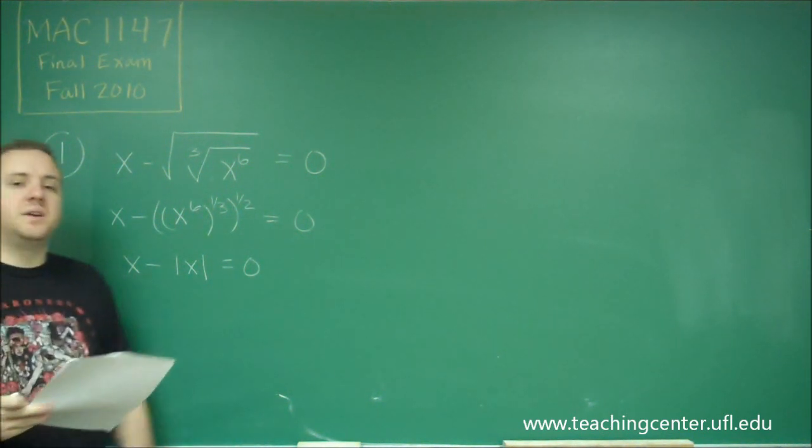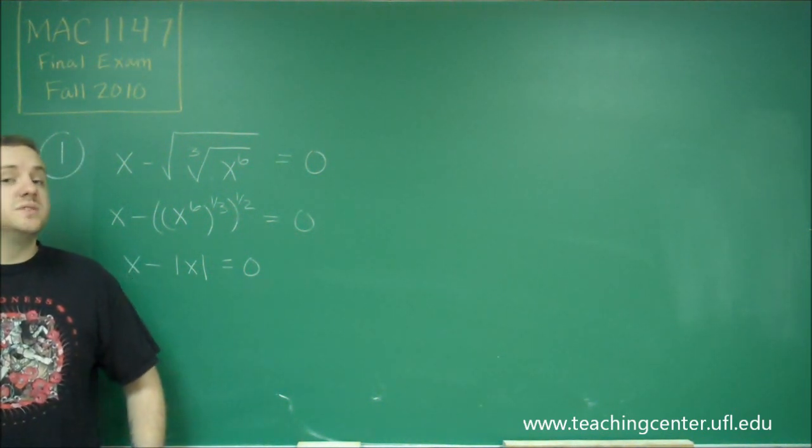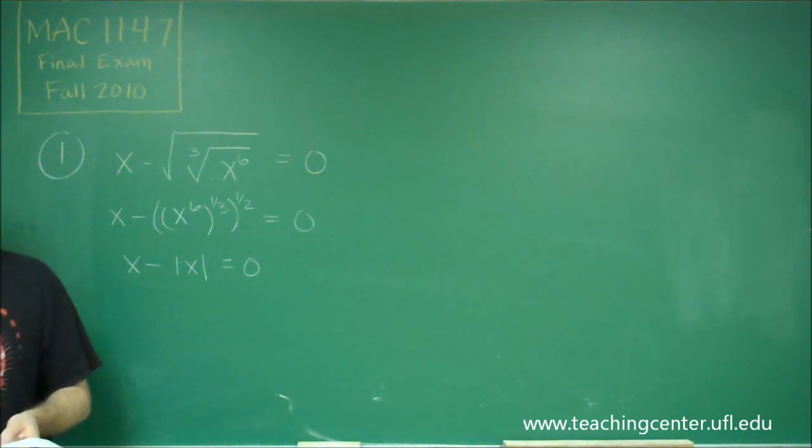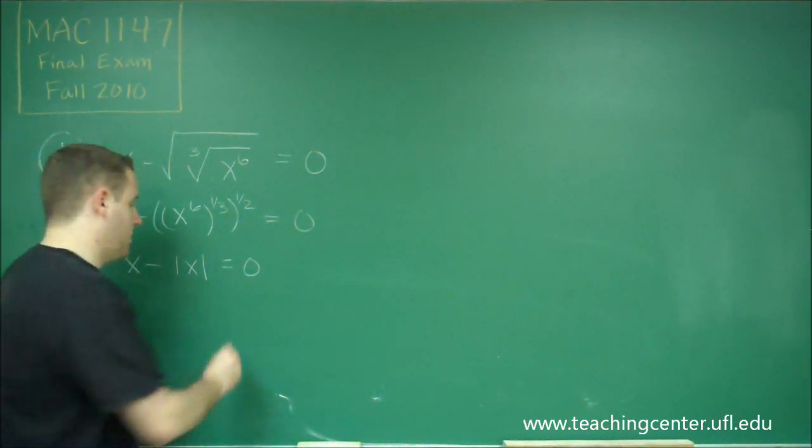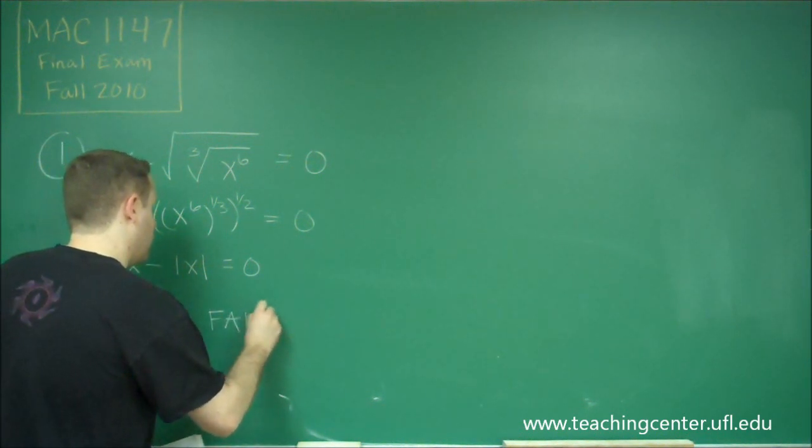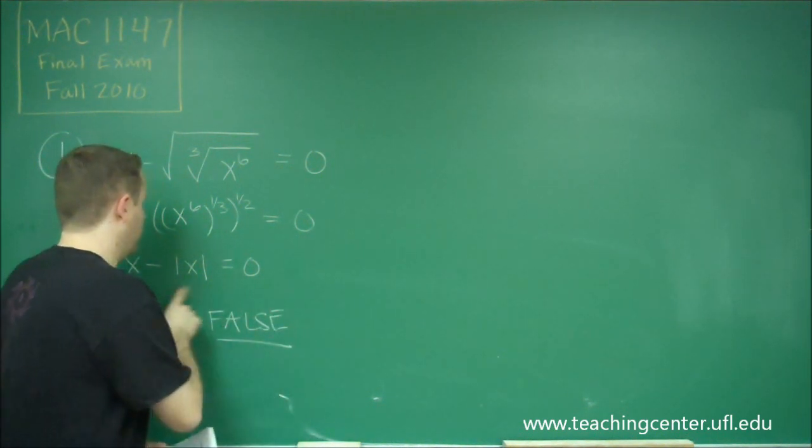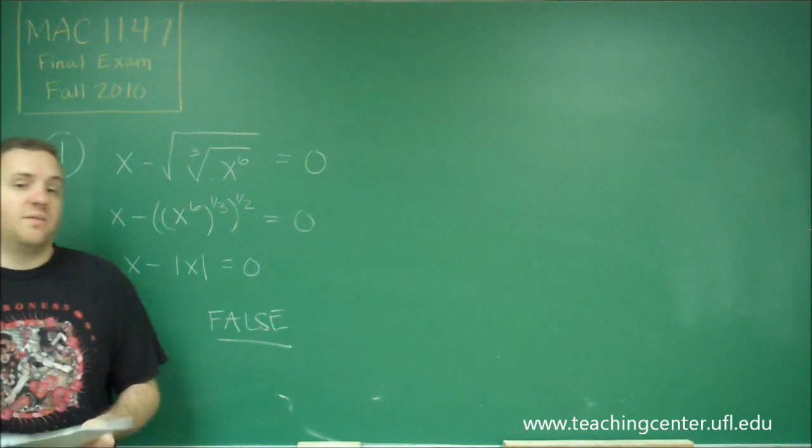So x minus absolute value of x equals zero is only true sometimes, if x is a positive number or if x is zero. So this question here is going to be false. Those don't cancel out because you have absolute value of x.